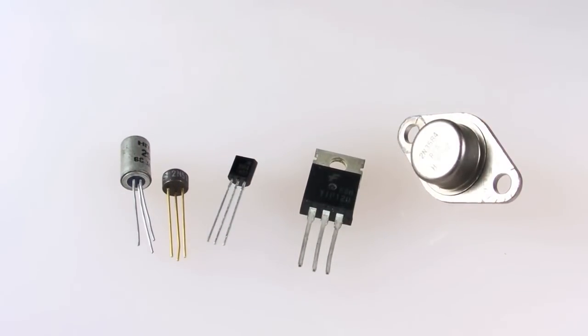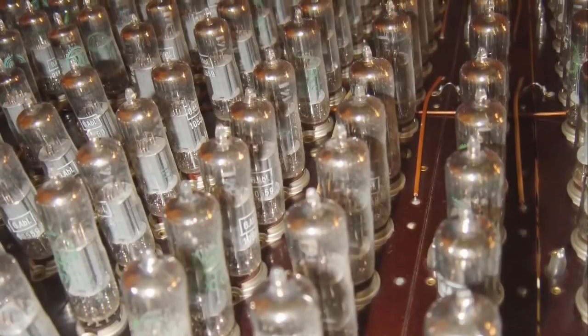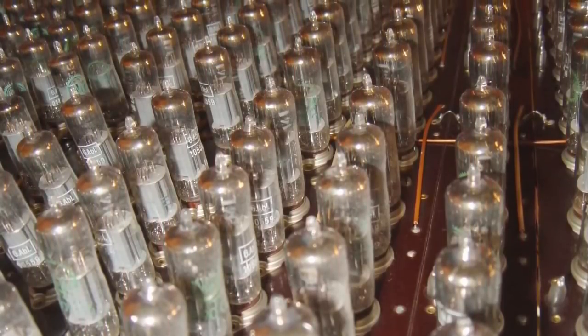Before transistors hit the scene, vacuum tubes were used for similar purposes, but tubes had some problems. They were expensive to manufacture, they generated a lot of excess heat, and they needed to be replaced pretty often. Most of the research that went into developing the transistor was actually done in search of a successor to the vacuum tube.